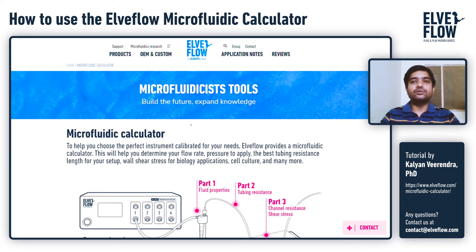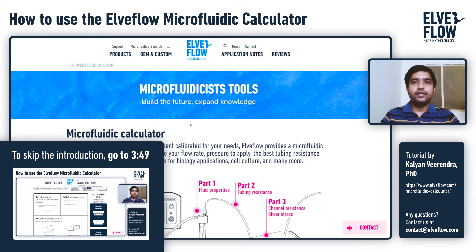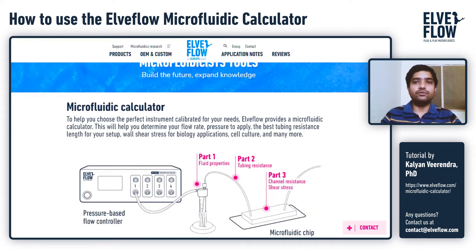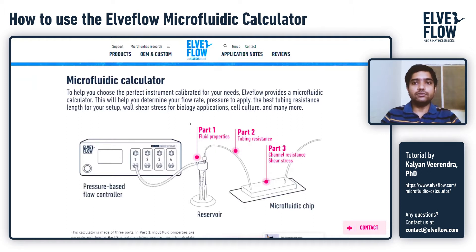Hello and welcome to the tutorial on how to use the LFLOW Microfluidic Online Calculator tool. This tool has been designed to help researchers and especially non-specialists of microfluidics. It helps you assess key parameters to configure your microfluidic experiment. Every microfluidic chip and setup are different; here we will use a generic microfluidic system to give you a basic understanding of the parameters to select the right components for your setup.